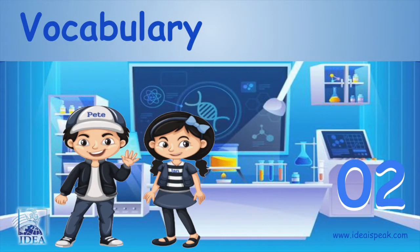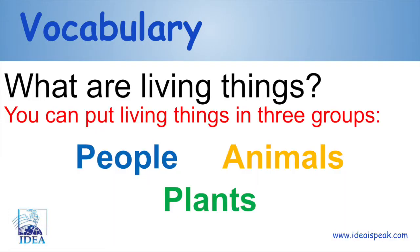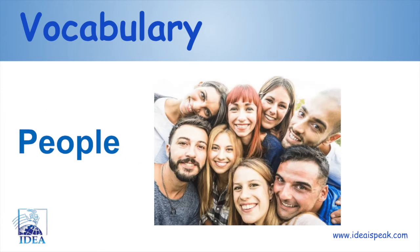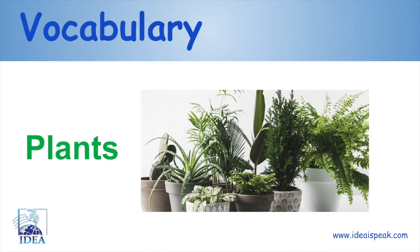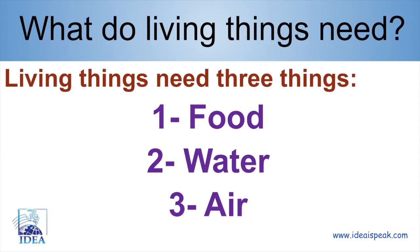Vocabulary. What are living things? You can put living things in three groups: people, animals, and plants.